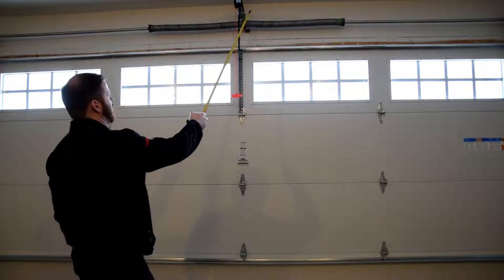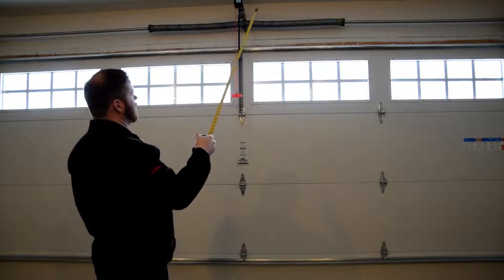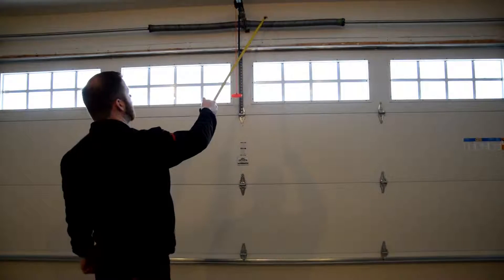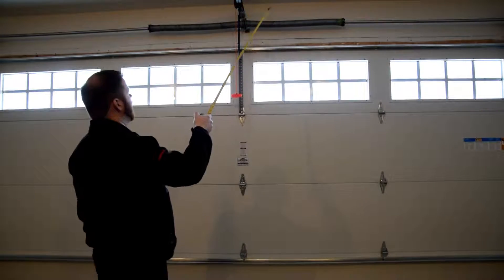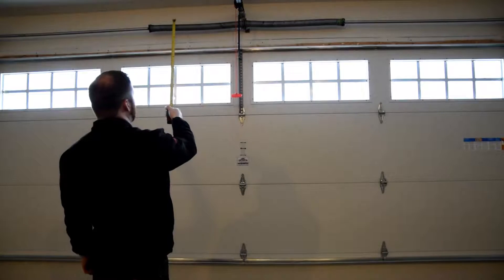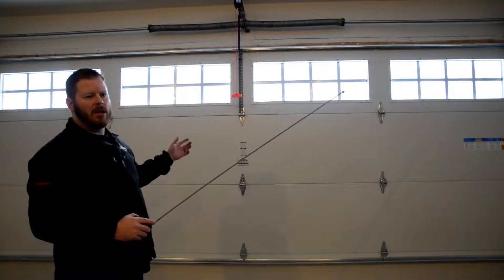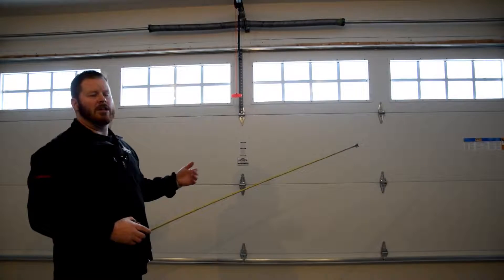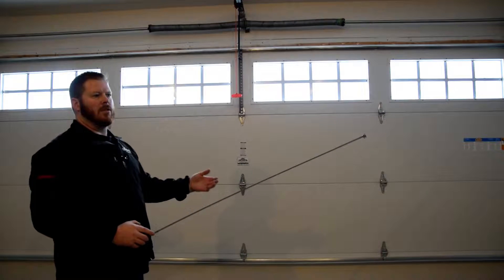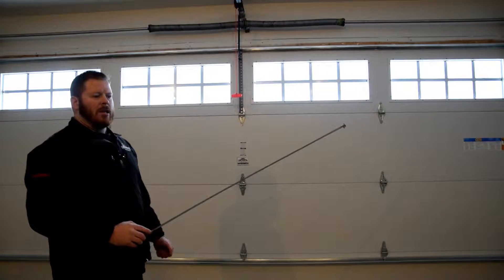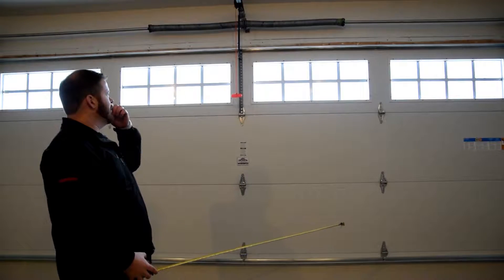If you have a two-spring door, it's a good idea to replace both springs. Generally, I've never seen both springs break—you'll usually have one break before the other. But that other one has the same cycle count on it, and a cycle is measured from an open and close as one cycle. Standard doors are engineered for 10,000 cycles, which usually runs anywhere from seven to ten years, depending on maintenance and how many times you open and close your door system.